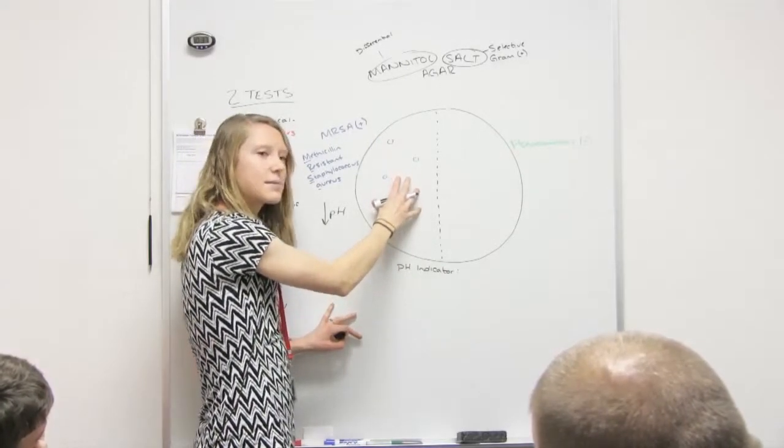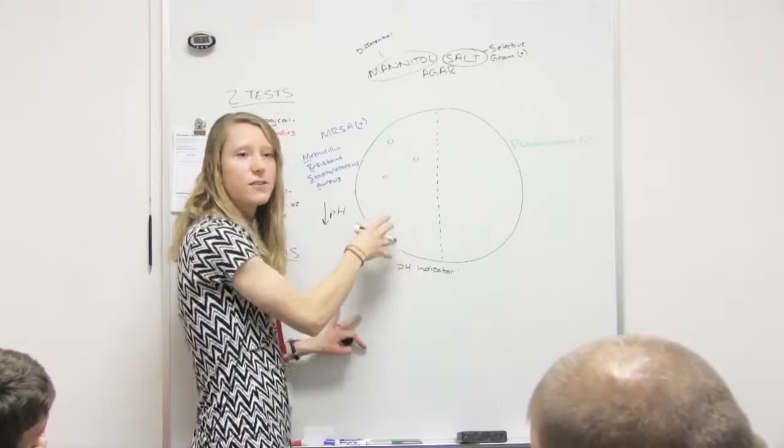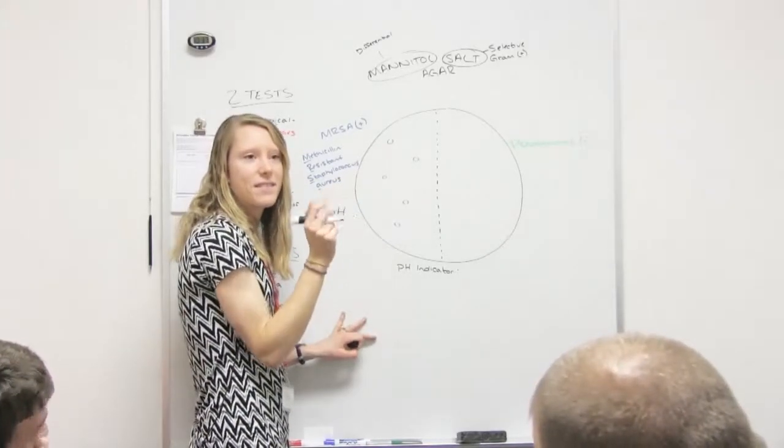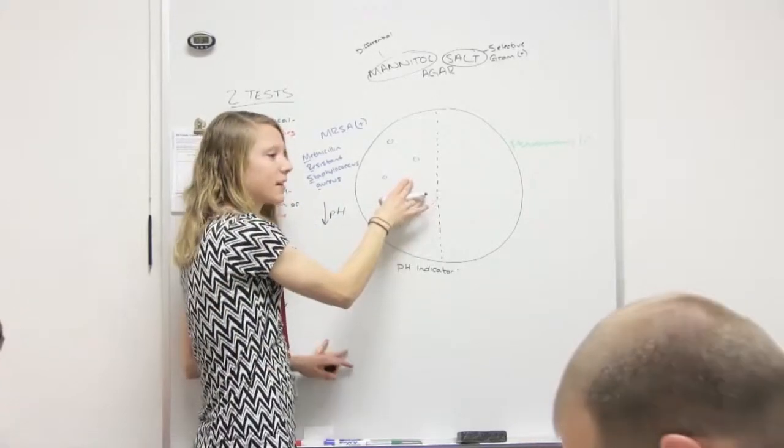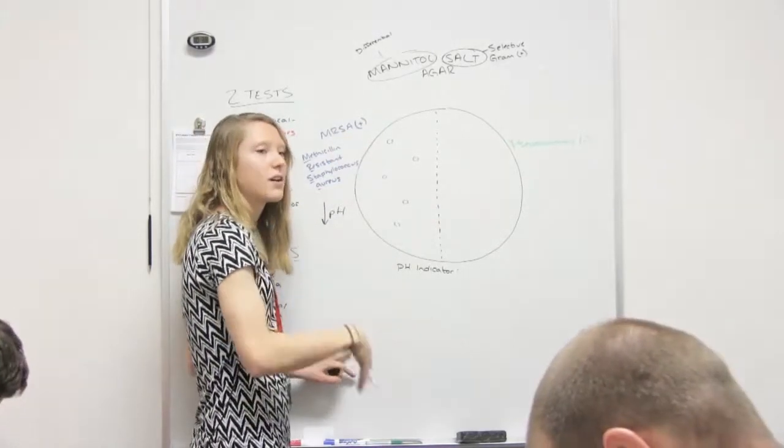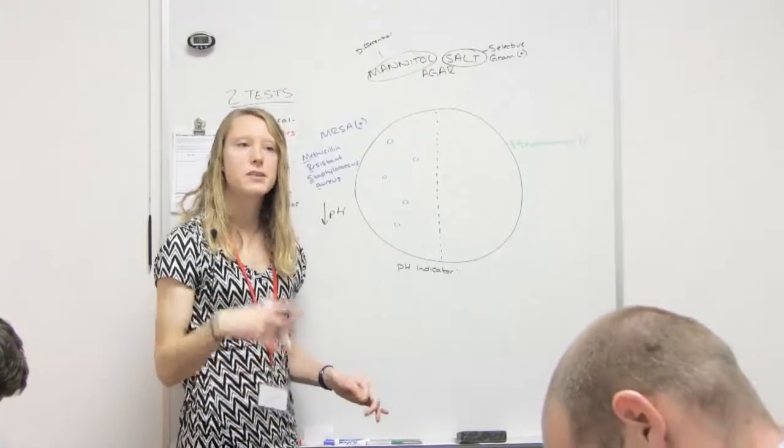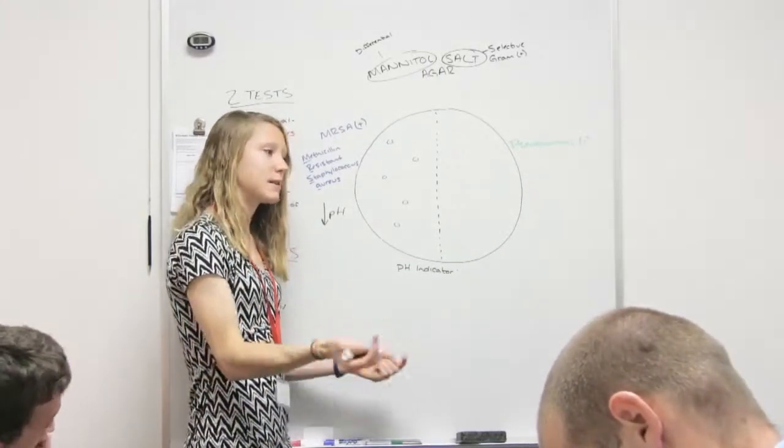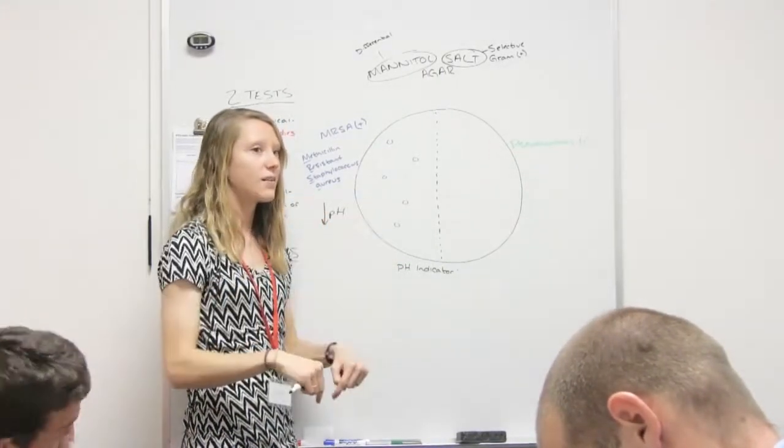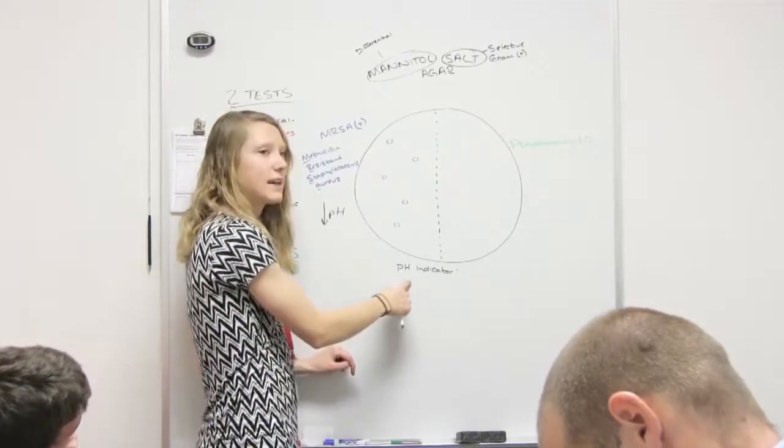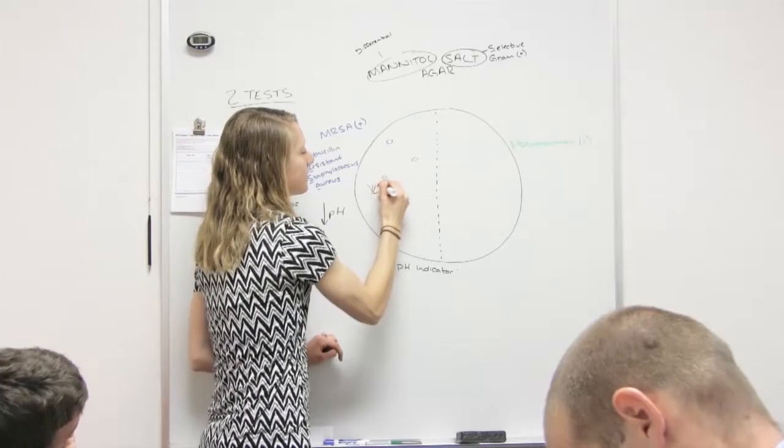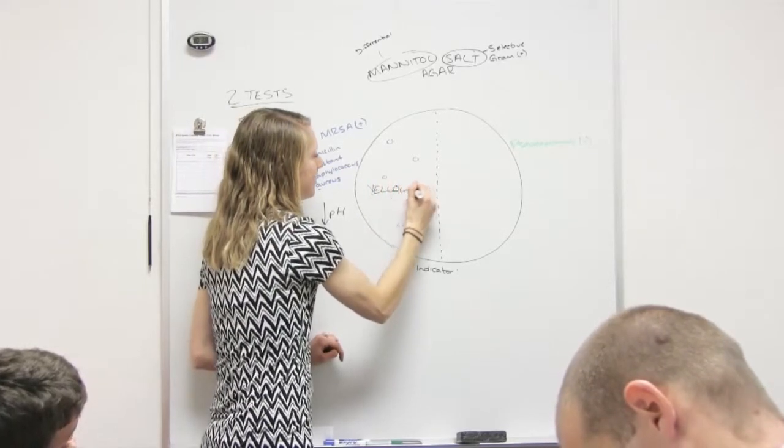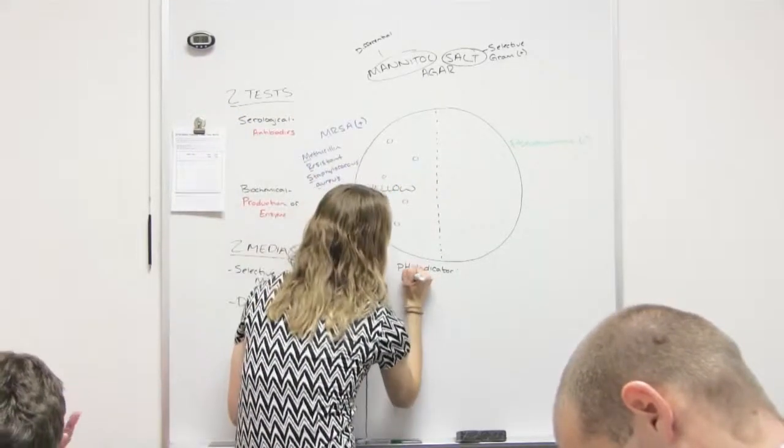It's creating acid because it's fermenting the mannitol, right? So I'm trying to get all the steps in here. Because the MRSA had the enzymes to ferment mannitol, they're going to ferment mannitol. When it ferments the mannitol, it produces acid. The acid makes the pH on that side of the plate go down, which means the pH indicator turns this side of the plate yellow. Did all those steps make sense? Yeah.